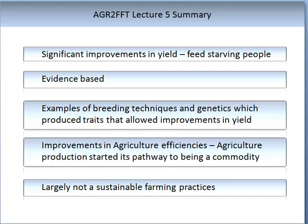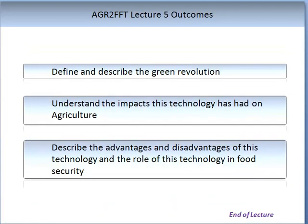However, there is a downside to the Green Revolution, as it is highly intensive in resource use and is regarded as largely not a sustainable farming practice. Improvements on the Green Revolution have been made since. The learning outcomes for this lecture should now enable you to define and describe the Green Revolution, understand the impacts this technology has had on agriculture, describe the advantages and some disadvantages of this technology, and understand the role of this technology in food security. This brings us to the end of this lecture.